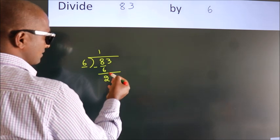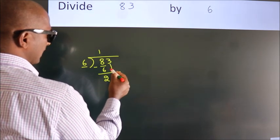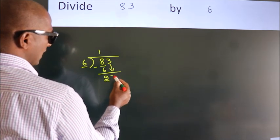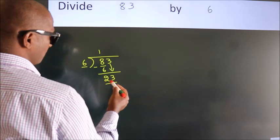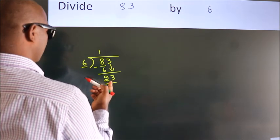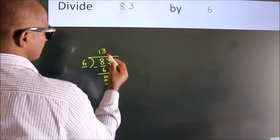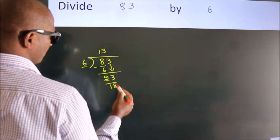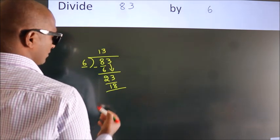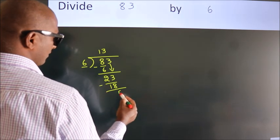After this, bring down the beside number. So, 3 down. So, 23. A number close to 23 in 6 table is 6 threes, 18. Now, we subtract. We get 5.